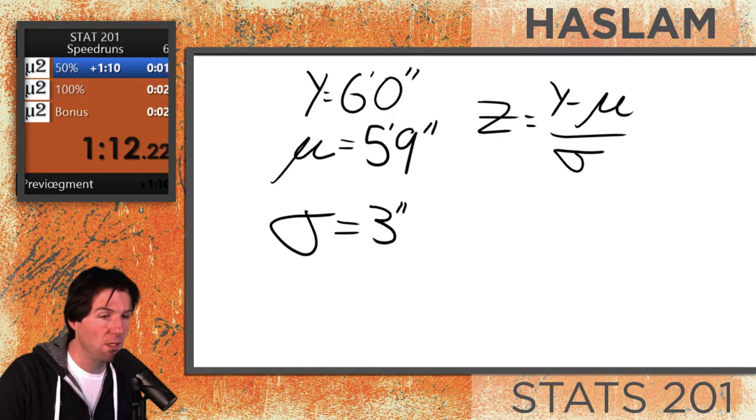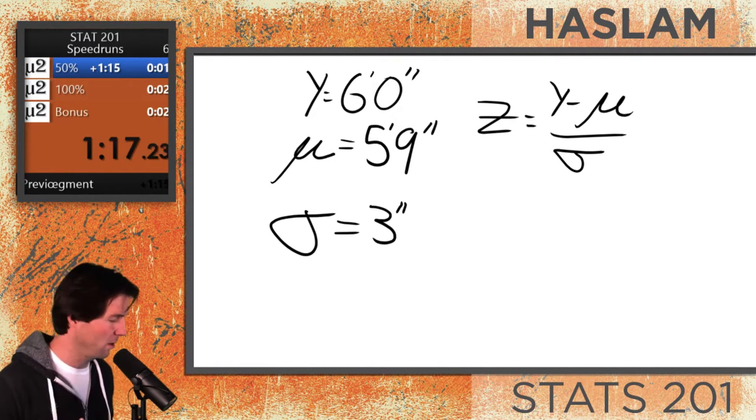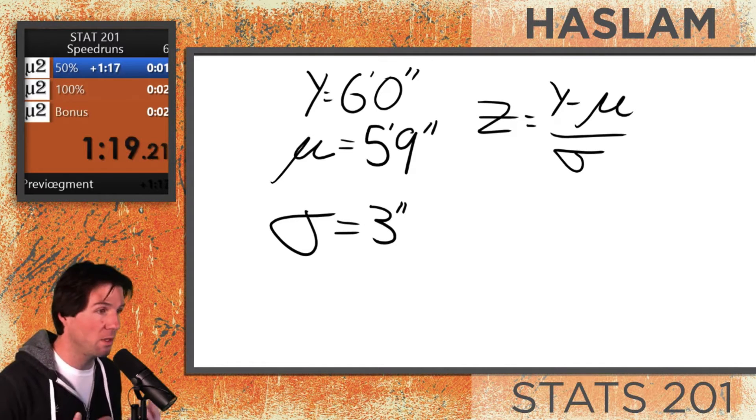Observation minus mean over standard deviation. You'll always get that y-value because we'll always tell you what are we talking about here? Someone's height. And then we want to find out what the z-score is.